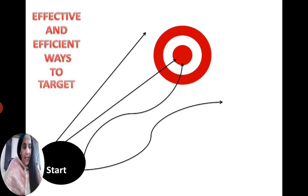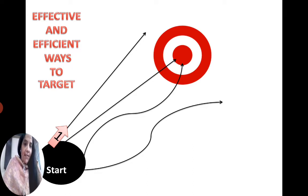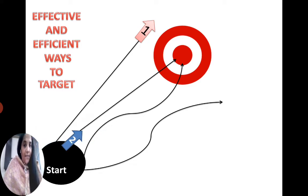So these are four alternatives in front of us. How will we decide which option is effective and which is efficient? Now we know the meaning of effectiveness and efficiency. The first alternative moves in a straight way but never hits the target. The second alternative takes the right direction — straight direction — and it hits the target.